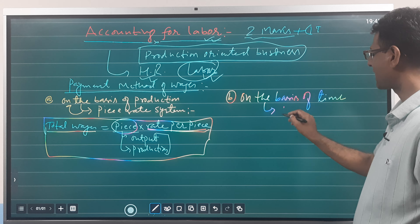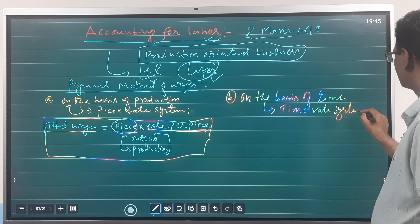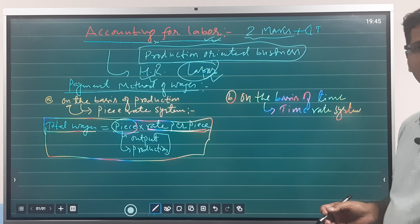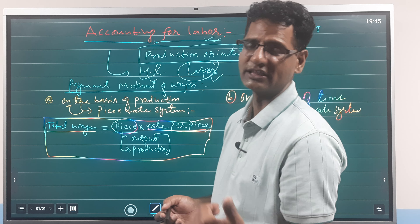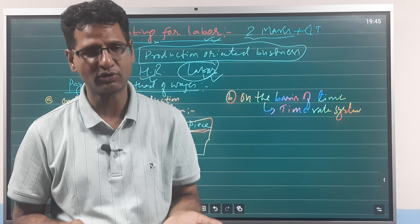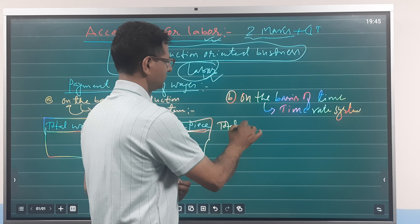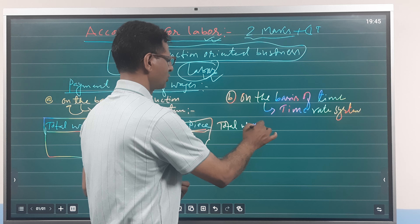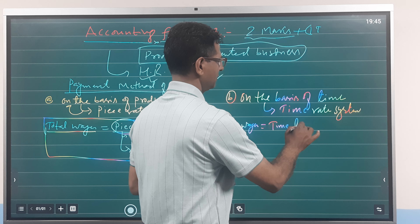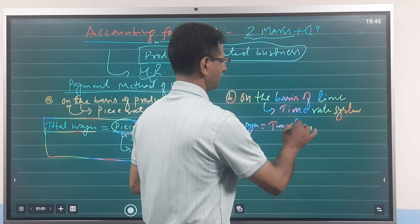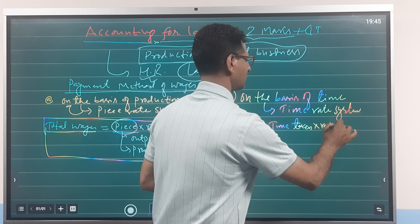The second method is the Time Rate System. Under the time rate system, if an employee contributes more time, they receive more wages. The formula is: Total Wages = Time Taken × Rate per hour (time rate).